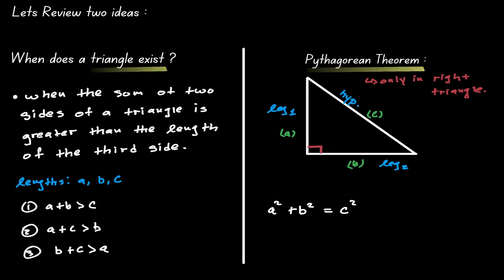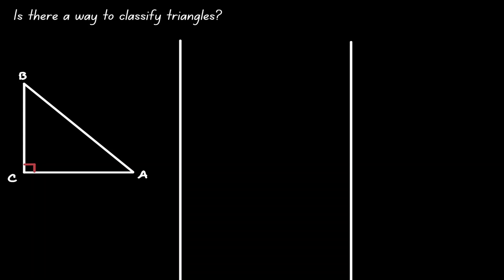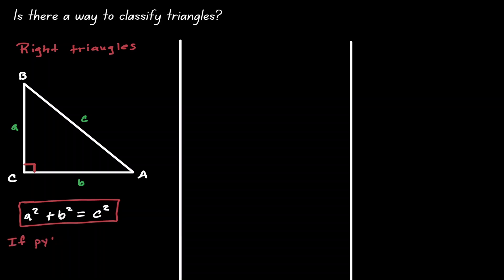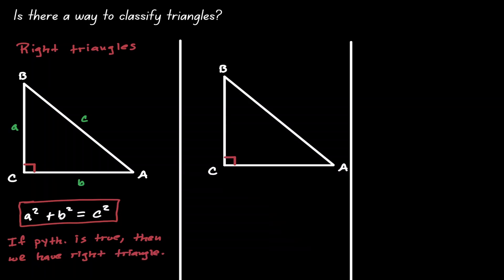Now that we have reviewed these ideas, let's discuss the converse of the Pythagorean Theorem. The converse helps us answer the question: can we classify triangles? We have one way to identify right triangles. Given sides A, B, and C, if A squared plus B squared is equal to C squared, then we know that we have a right triangle. By definition, a right triangle has a 90-degree angle.